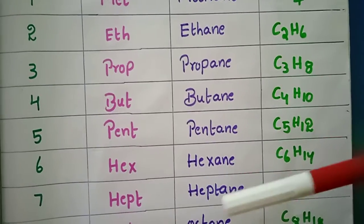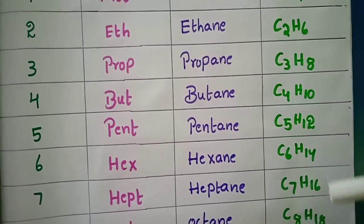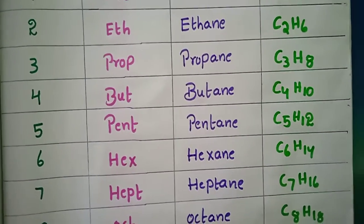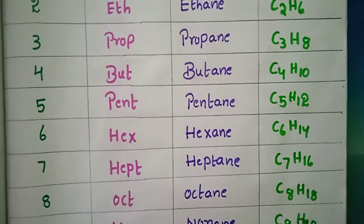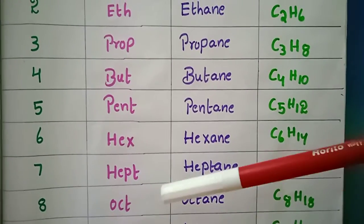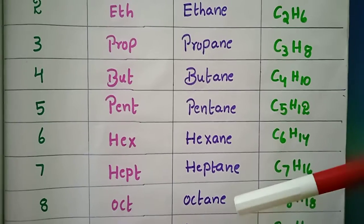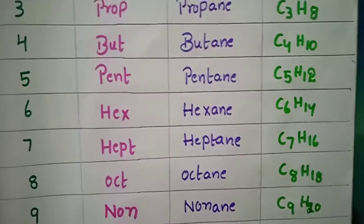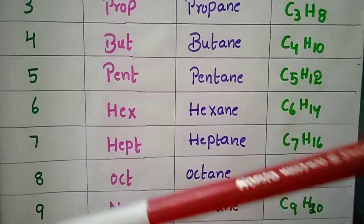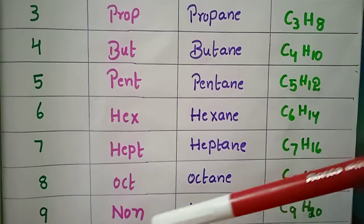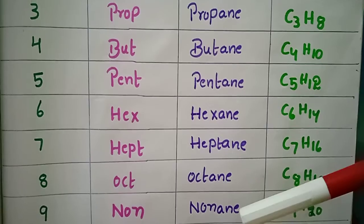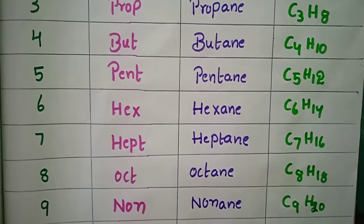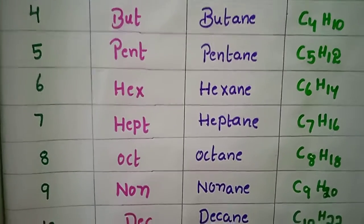For 7 carbons, the word root is 'hept' — heptane, formula C7H16. For 8 carbons, the word root is 'oct' — octane, formula C8H18. For 9 carbons, the word root is 'non' — nonane, formula C9H20.